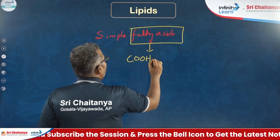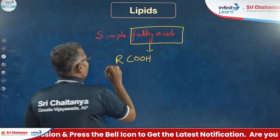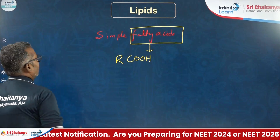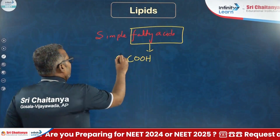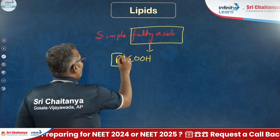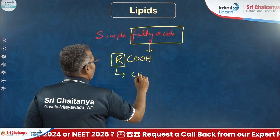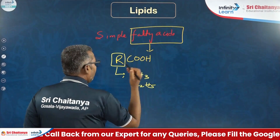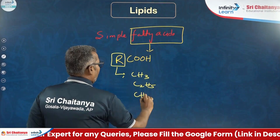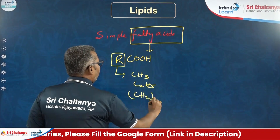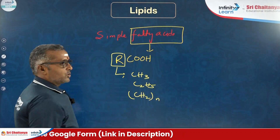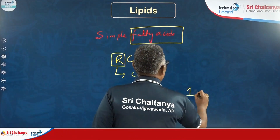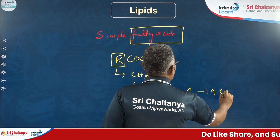A carboxylic group is attached to an R alkyl group. The R group may be methyl or ethyl, or n number of CH2 groups may be present. It includes around 1 to 19 carbons.